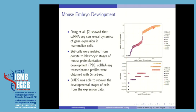We also applied our method to other more noisy datasets. Here I'm showing the results for the publicly available single-cell RNA-seq data, which studies the dynamics of gene expression levels for mammalian cells. There are 269 cells plotted here.